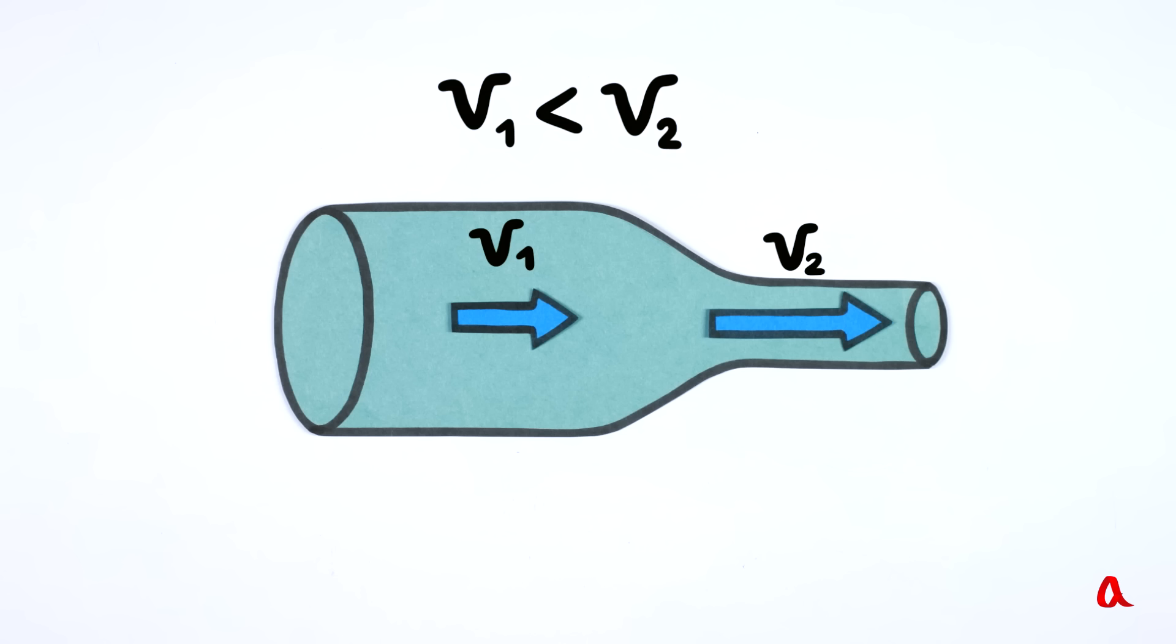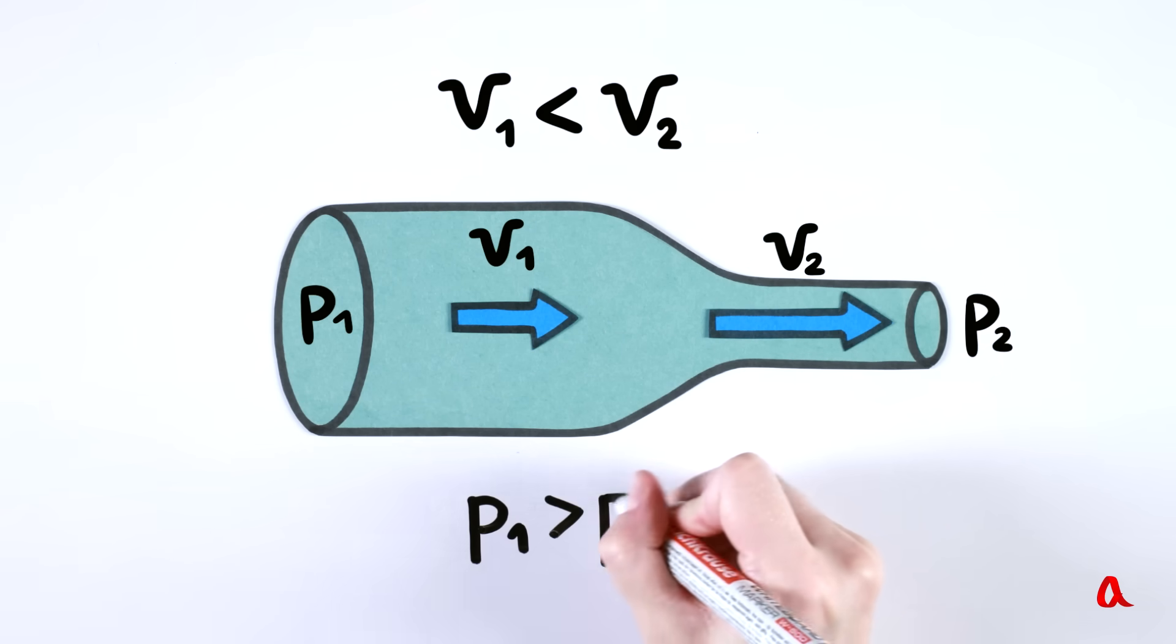According to Newton's second law, in order to increase the speed, some force must be applied to water. Thus, the pressure in the wider part of the pipe must be higher than that in the narrower one.